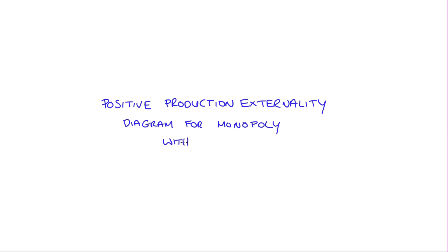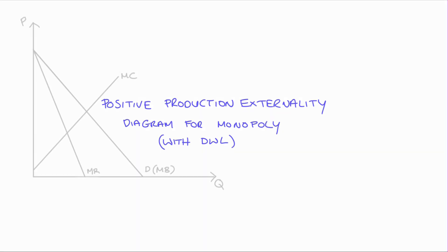Hi everyone. In this video I'm going to go through how to understand our market diagram when we have a monopoly and we also have a positive production externality. As part of the discussion I'm also going to go through deadweight loss.